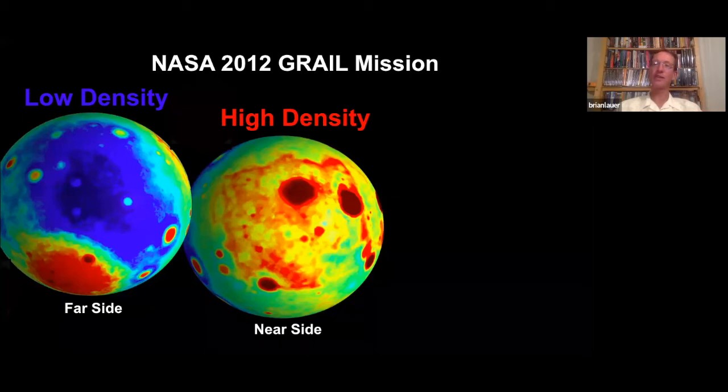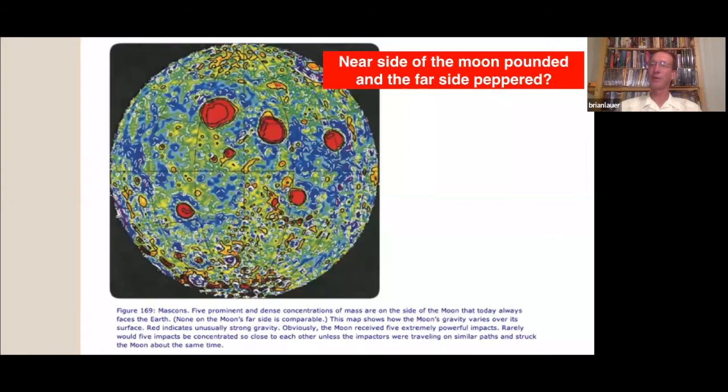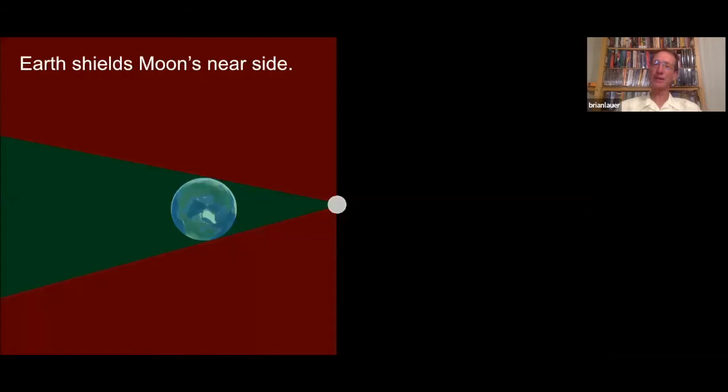It looks like it's been shot with buckshot, which is unusual because the Earth is going to protect the near side. You know, if something's coming in from the left, it's going to hit the Earth, not the Moon. Something coming in from the right is going to hit the Moon.